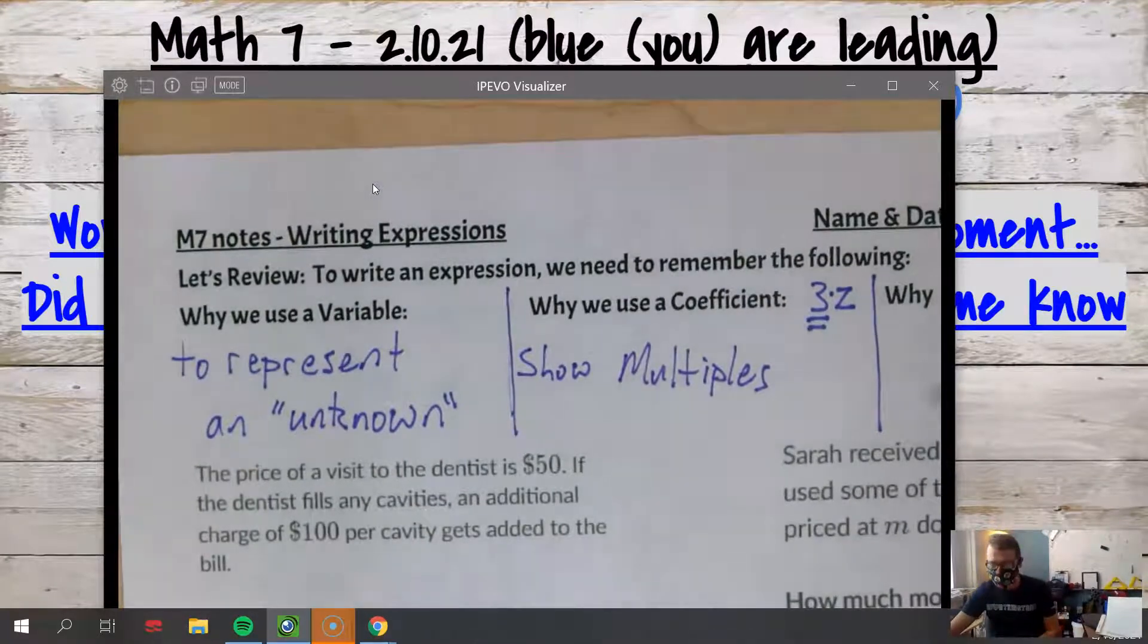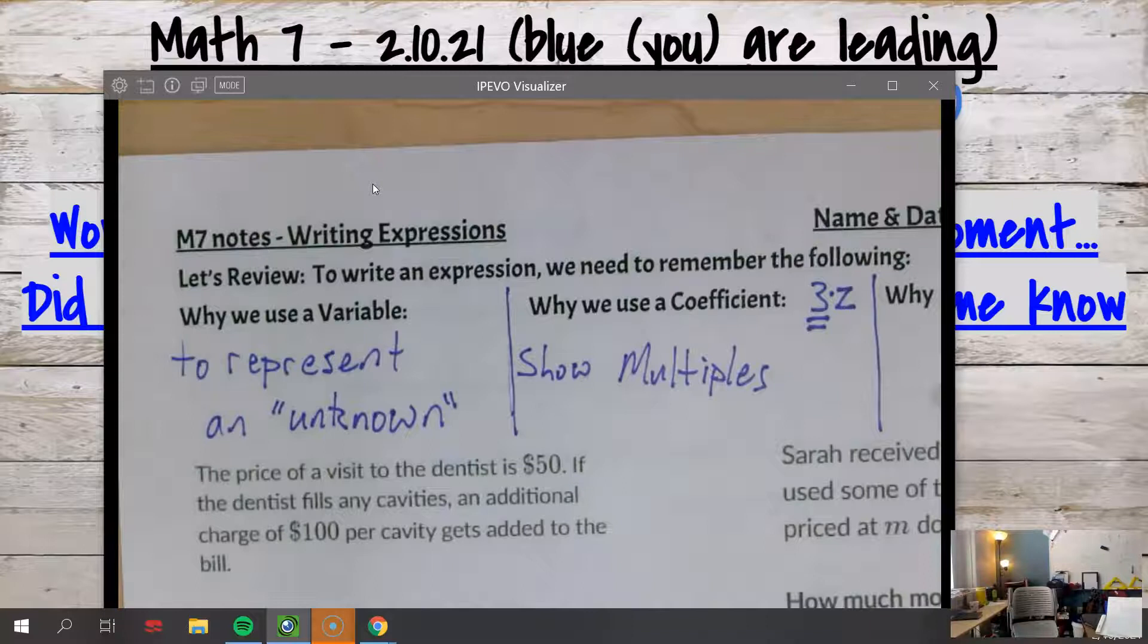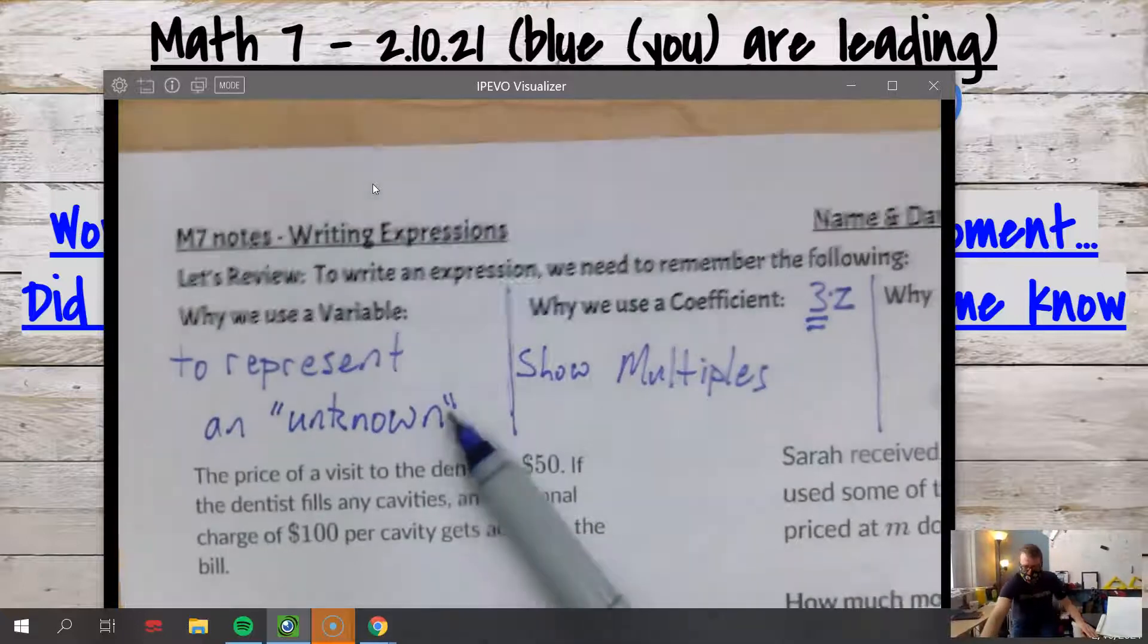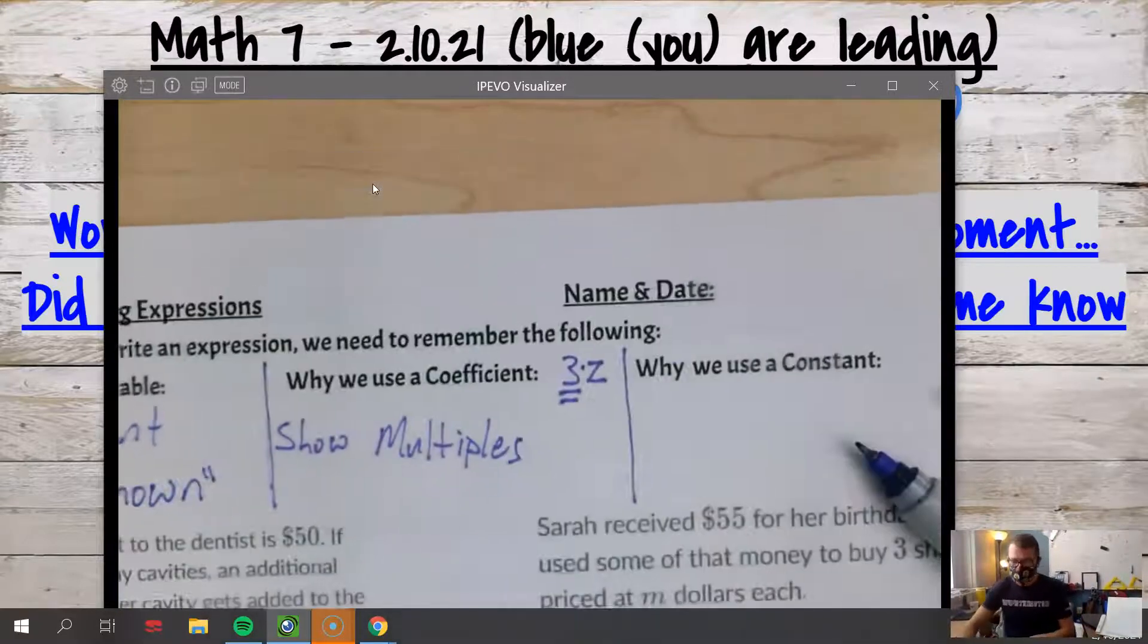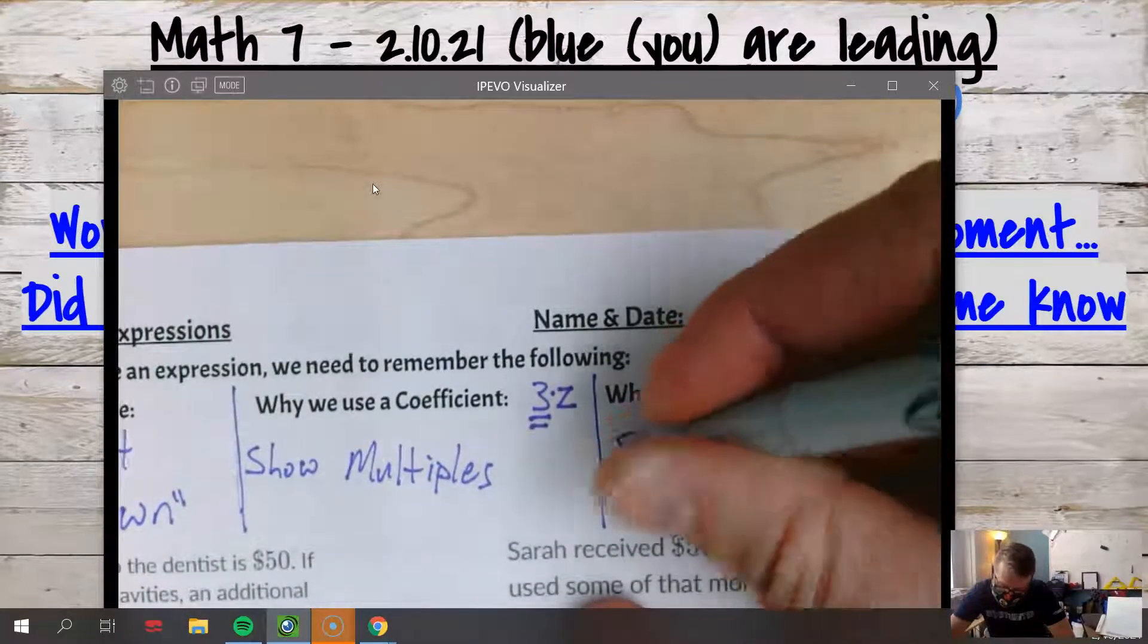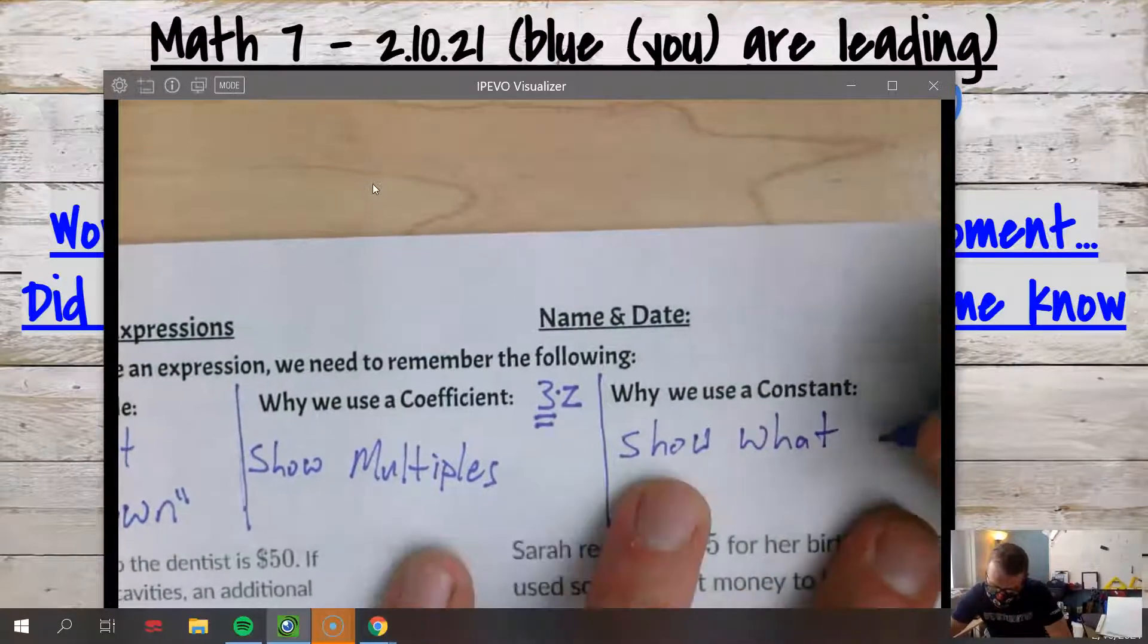Why don't we use a constant? It's to show something that we know, right? So the variable is to show something that we don't know; the constant is to show what we know.